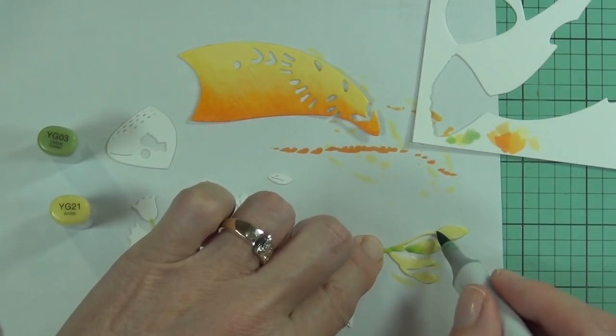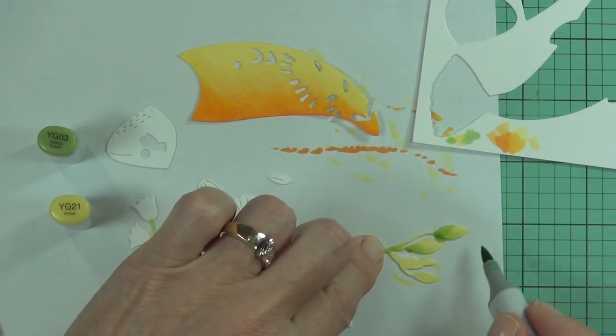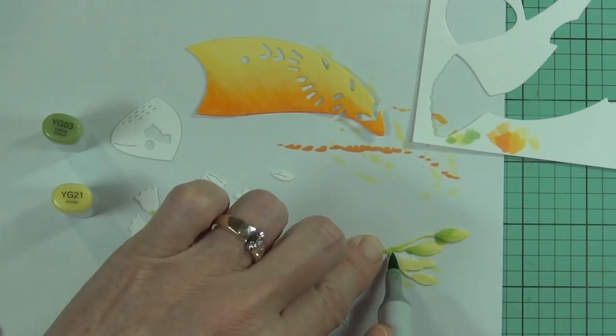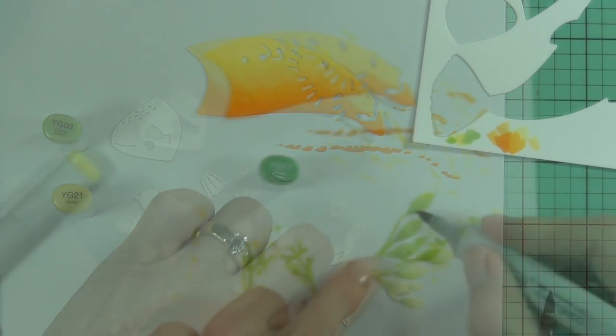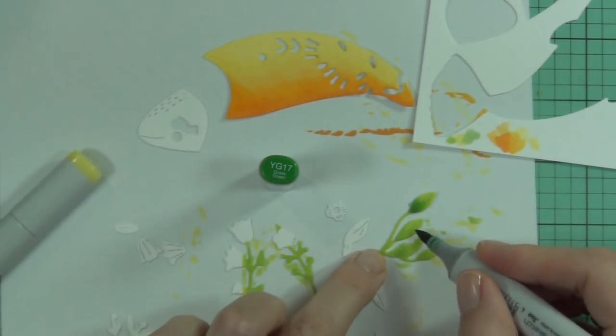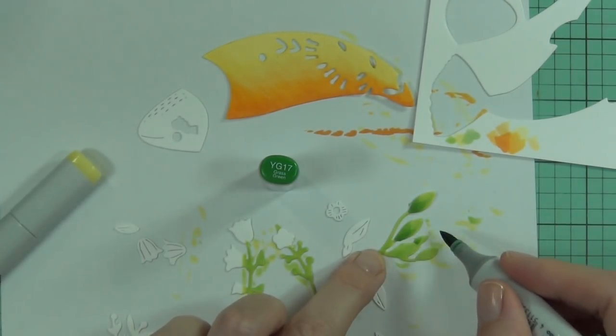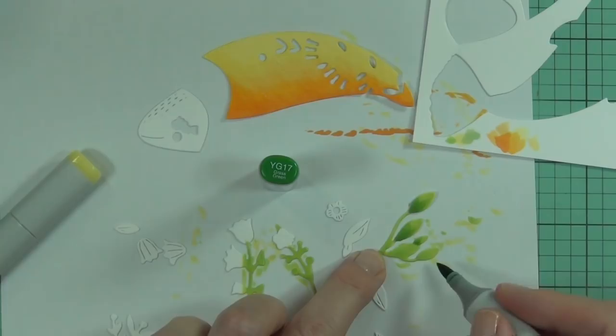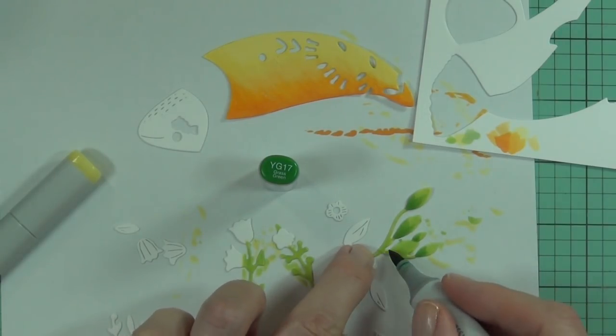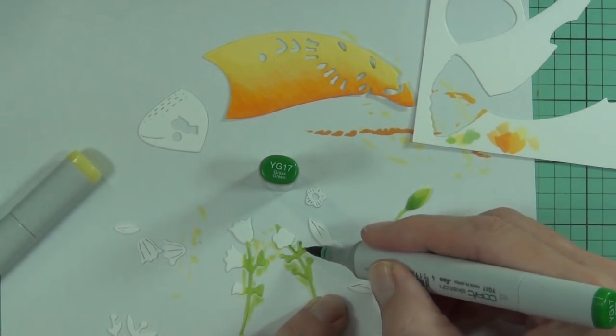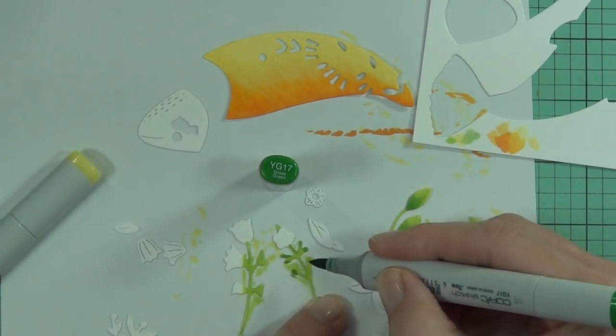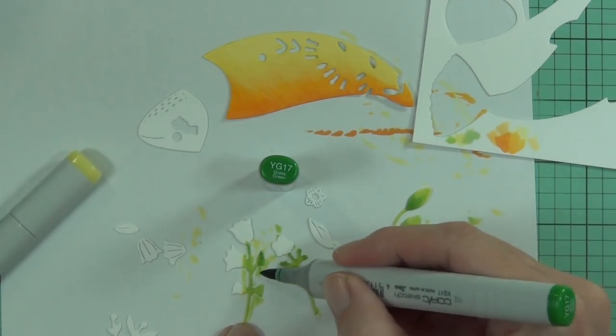The good thing about this die cut is it does have all those pieces within it, so if you don't have Copic markers or if you didn't want to color it with your pencils or paints or whatever other medium you've got, you have got that option with this particular die set. You can actually cut it out of all the different layers and still get that look because you'll notice I have to go kind of searching.